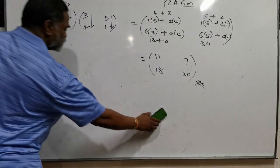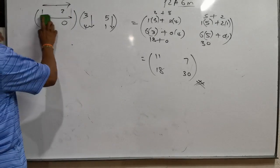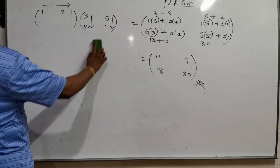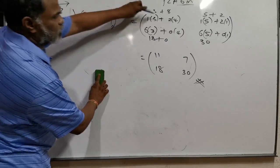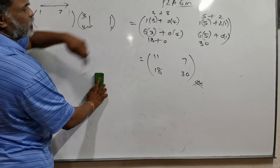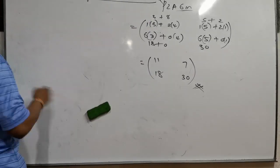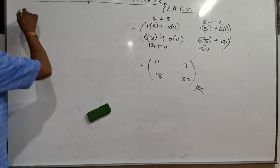So for the multiplication results: 3 + 8 = 11, 5 + 2 = 7, 18 + 0 = 18, 30 + 0 = 30. That is the way to multiply. Remember, row times column — just keep applying that method.